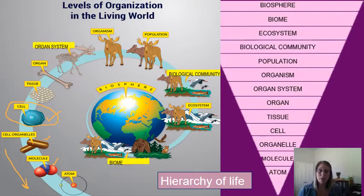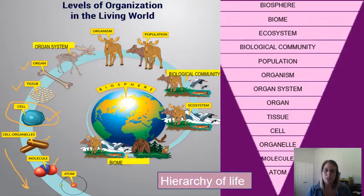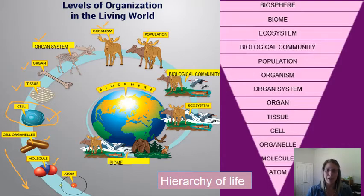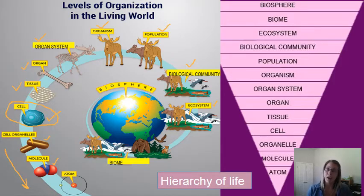In multicellular organisms, when cells with a similar function are grouped together, they make up a tissue. Certain tissues working together for a function form an organ. Organs that all work together — like your digestive system — form an organ system. When we put those organ systems together for a functioning individual, that's called an organism. Organisms of the same species in an area make up a population. All the living organisms in that area together form a biological community, and then we get to an ecosystem, which includes all living organisms and all abiotic factors in that area and how they interact.